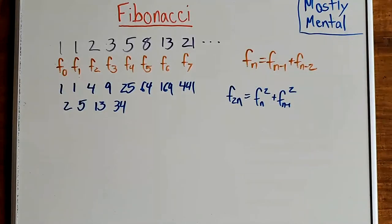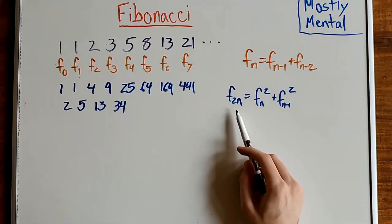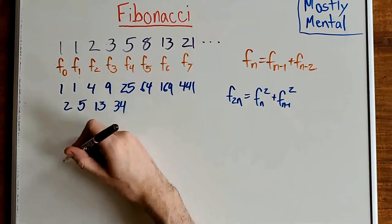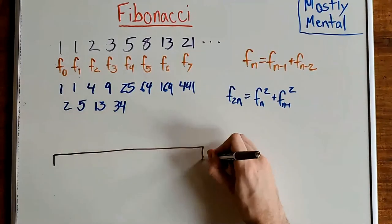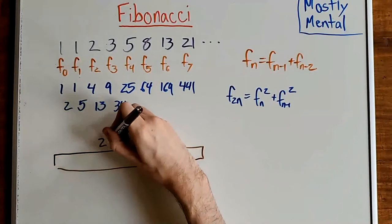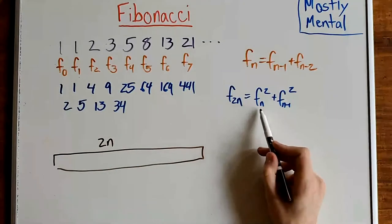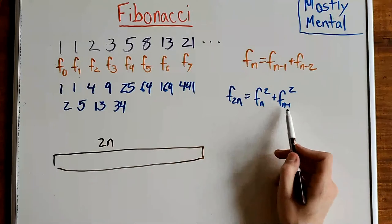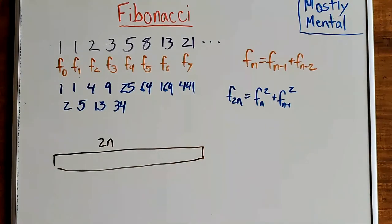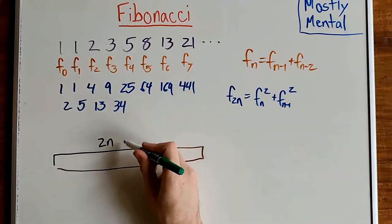Once again, let's prove it with tilings. Now, the left side here is already F sub 2n, so that suggests we should be tiling a row of length 2n. And on the other side, we have F sub n squared and F sub n minus 1 squared, which suggests we want to break it into two tilings of length n and two tilings of length n minus 1. Well, the n's are pretty easy to find. We just cut the tilings in half.